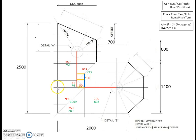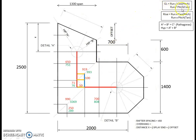So it's simply: major common rafter run minus minor common rafter run gives you the offset, times by 2 gives you the run of that valley rafter. To get the geometric length we use the same GL formula as all the other rafters in the common rafter family, and that gives us a geometric length of 115.